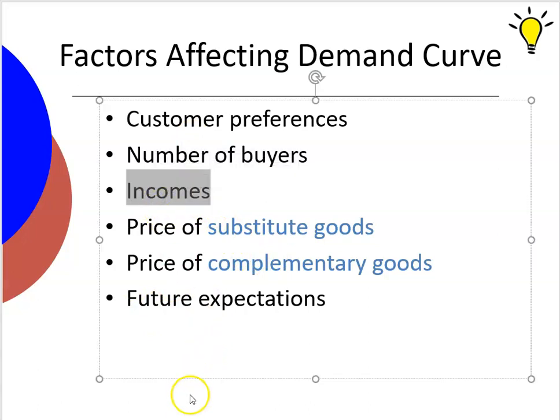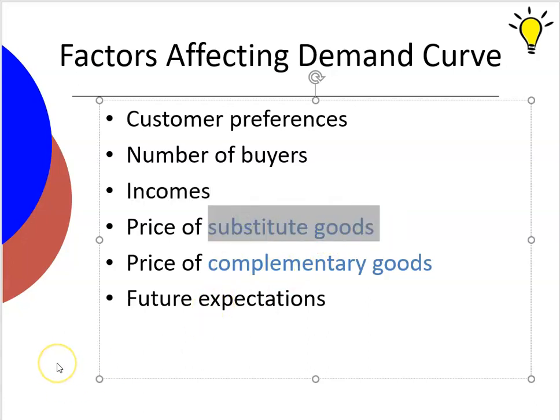What else affects it? Obviously, incomes. If people make more money, they're willing to buy more apples. If they make less money or lose their job, demand drops. There are also substitute goods — things I might buy instead of this product. Instead of apples I might buy oranges. If oranges are cheaper, I'll buy those instead; if oranges become very expensive, my demand for apples will go up.